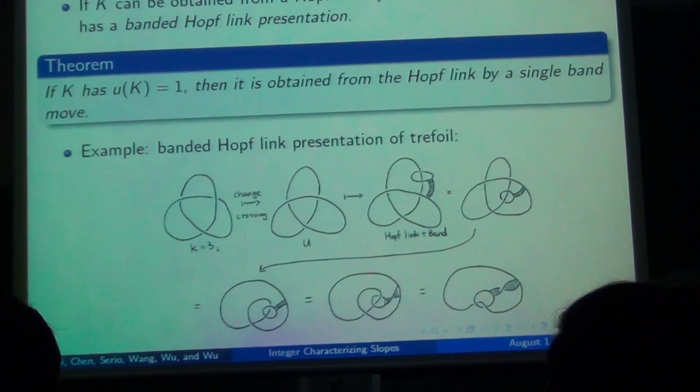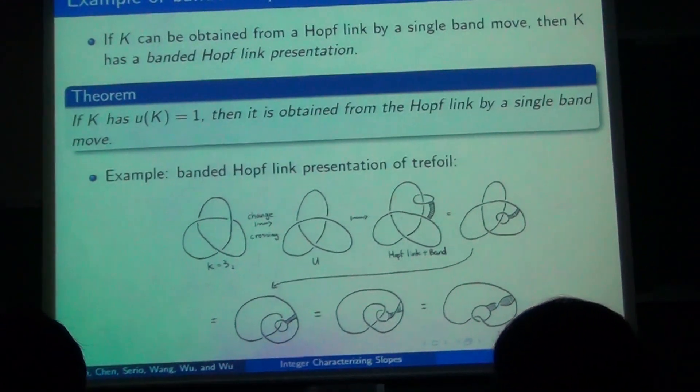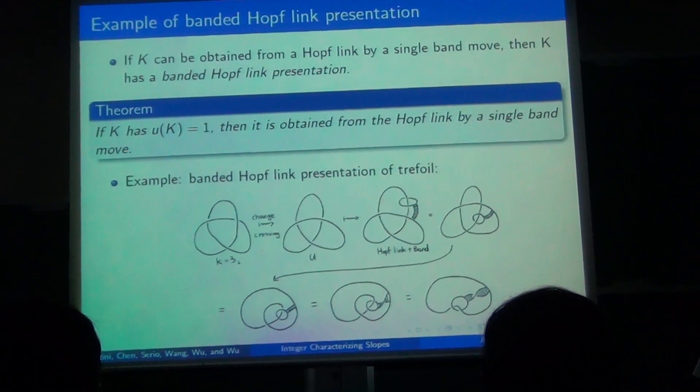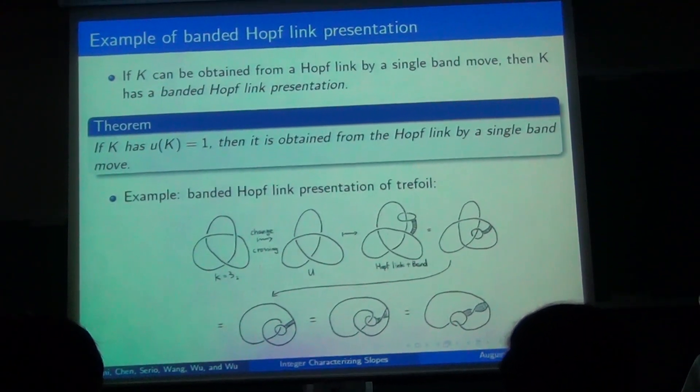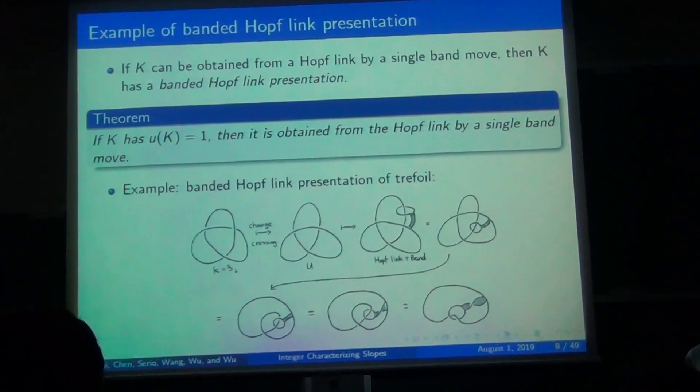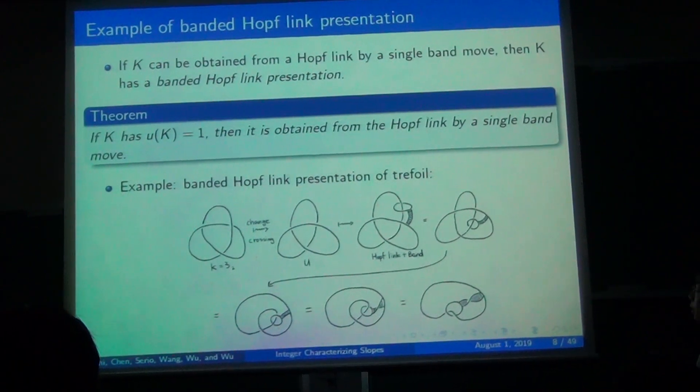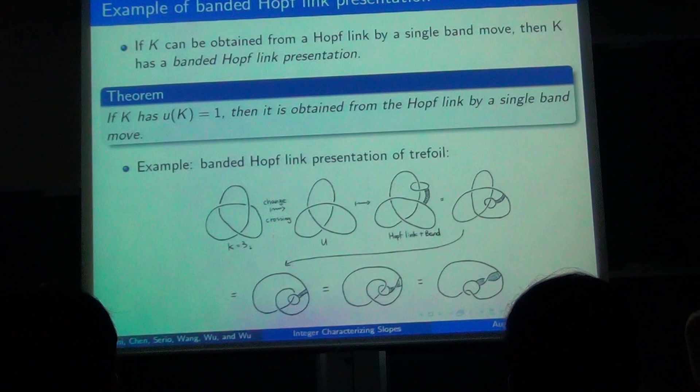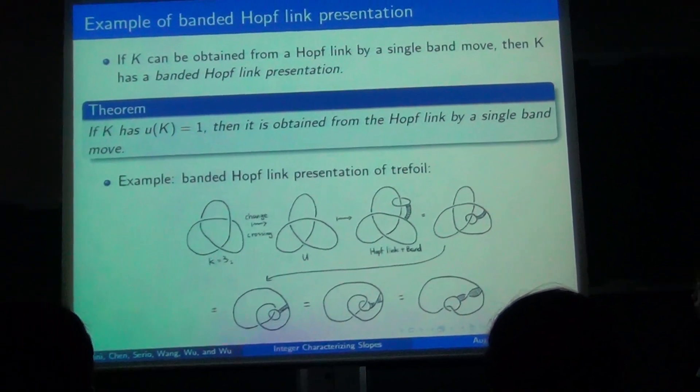And next, we say that if K can be obtained from the hoplink by a single band move, then K has a banded hoplink presentation. We have a theorem stating that if K has unknot number one, then it has a banded hoplink presentation.